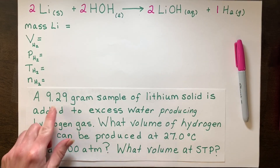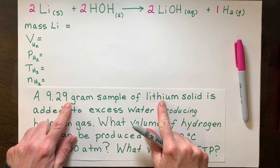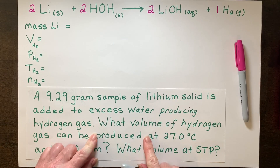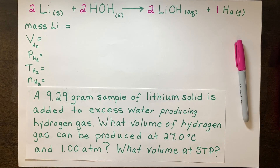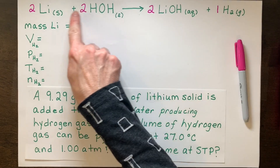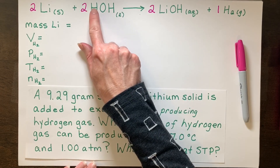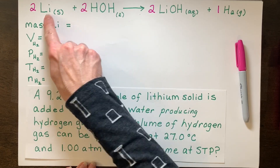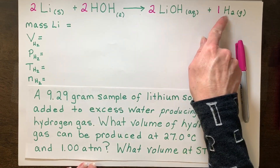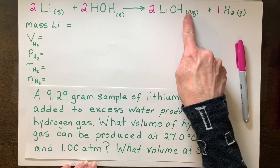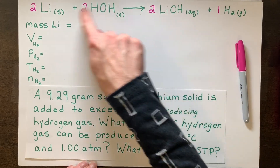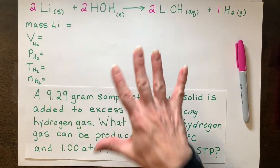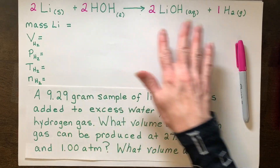So on to our problem. What if we had 9.29 grams of lithium reacted with excess water and it produced hydrogen gas at a temperature of 27 degrees Celsius and 1 atm? I'll solve for the molar volume at STP after, so we can compare the difference. I wrote the reaction already. It's a single replacement reaction where hydrogen is being replaced by lithium, so it turns into lithium hydroxide and hydrogen gas. I cannot use PV equals NRT or the molar volume at STP for a solution, a liquid, or a solid — make sure you never use an ideal gas law for something that's not a gas.